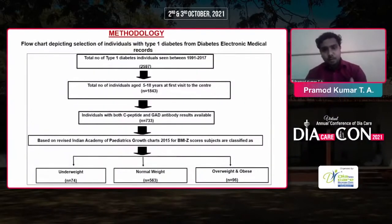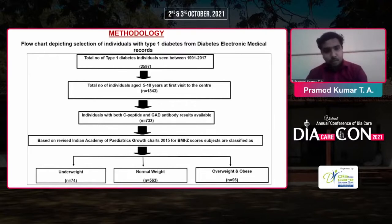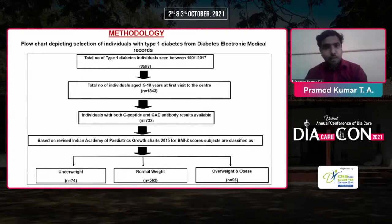This flow chart depicts the methodology of my study. The total number of diabetes subjects enrolled in our institute from 1991 to 2017 were 2,597. Of those, individuals aged 5 to 18 years at first visit were 1,843. Individuals with both C-peptide and GAD antibody available were 733. Based on the Indian Academy of Pediatrics growth chart BMAZ scores, they were classified into underweight (n=74), normal weight (n=563), and overweight or obese (n=96).